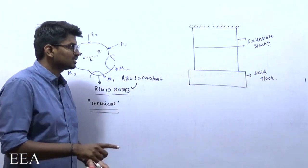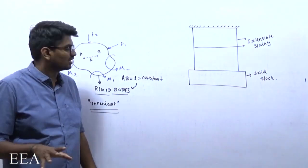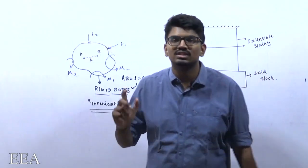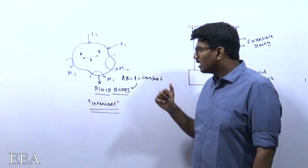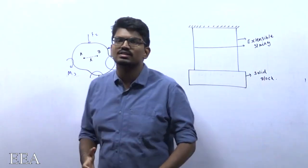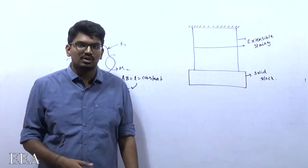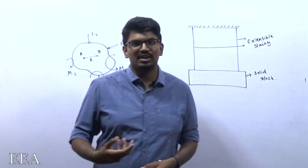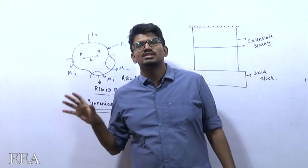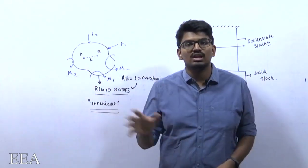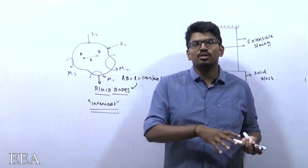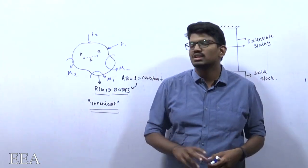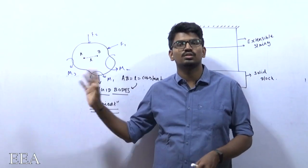If L is not constant, then it is a deformable body. In general, all practical bodies available in reality are deformable bodies only, but we can assume them to be rigid bodies for analysis. In engineering mechanics, we study only rigid bodies and assume the body is rigid — there is no change in the distance between two points.